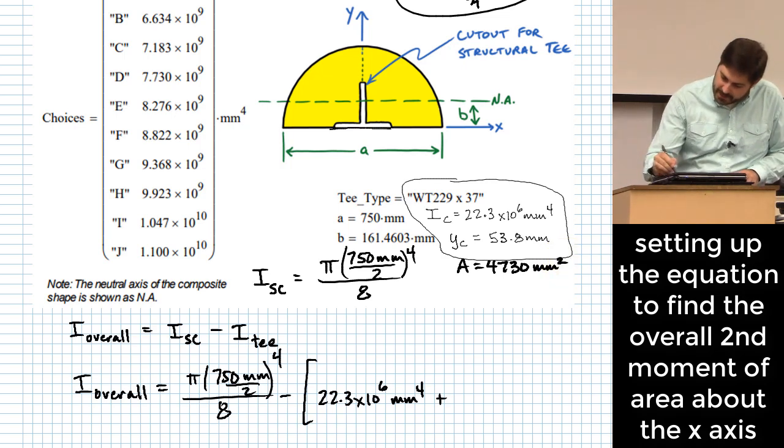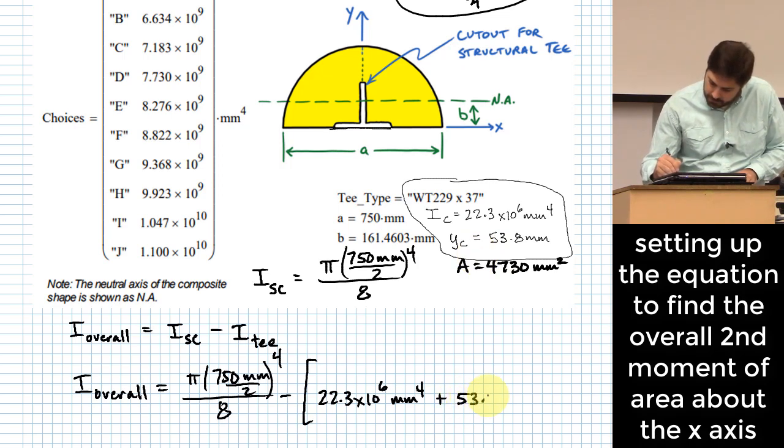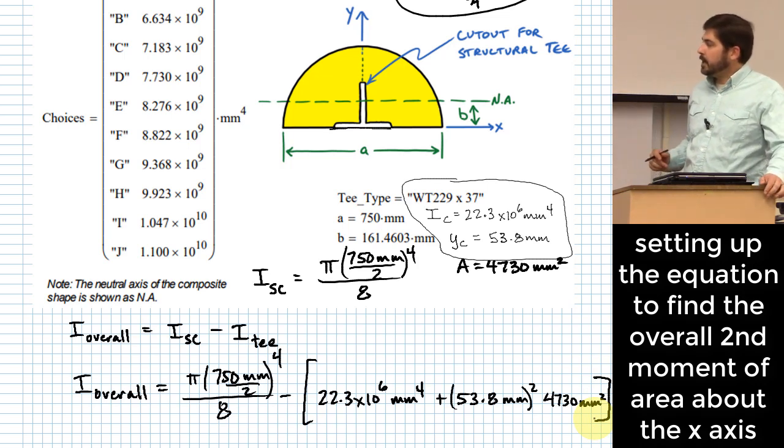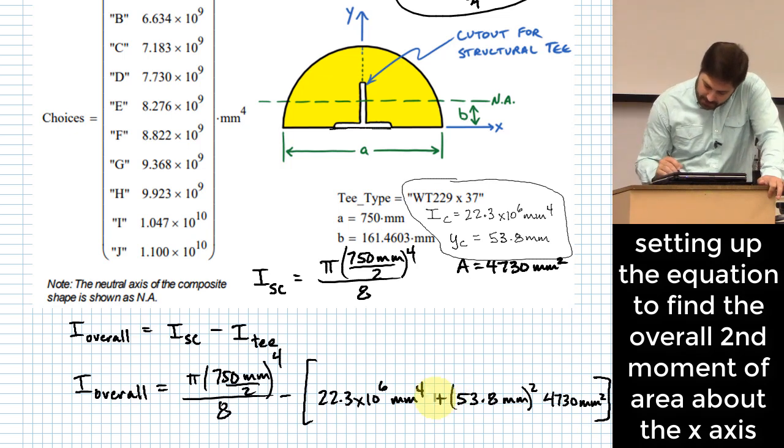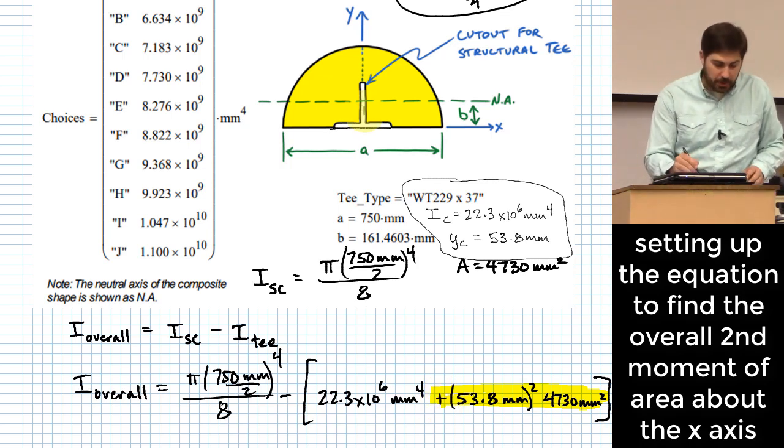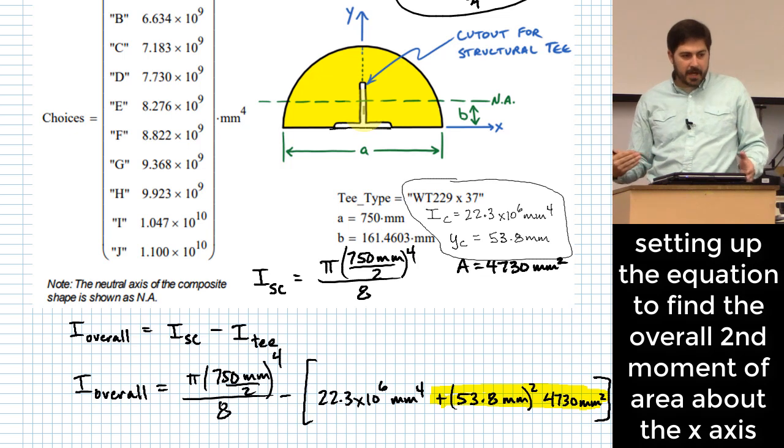So I'm going to add to this y sub c squared, 53.8 millimeters squared times 4730. And by doing this little last piece over here, this is what converts my second moment of area from being around a centroidal axis of the t to being around that top edge of the t.